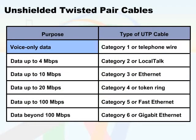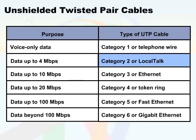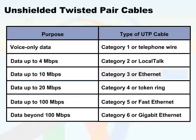For voice only data, Category 1 UTP cable or similar telephone wire can be used. For data up to 4 Mbps, we'll use Category 2 or Local Talk UTP cable. For data up to 10 Mbps, use Category 3 or Ethernet UTP cable.